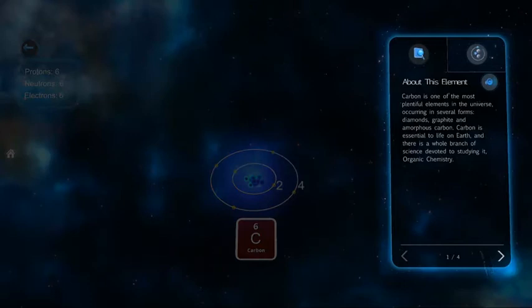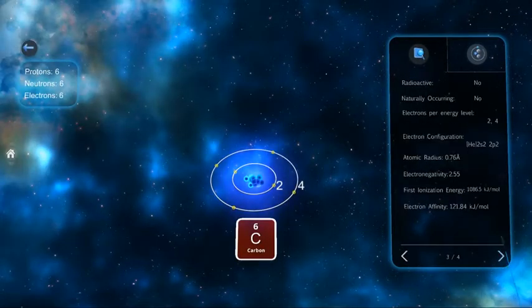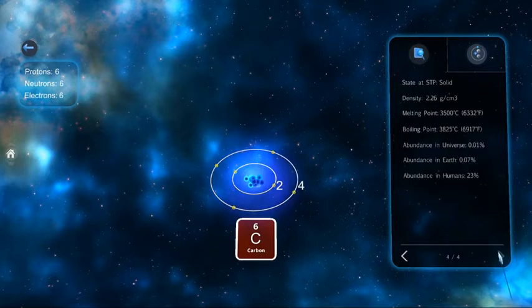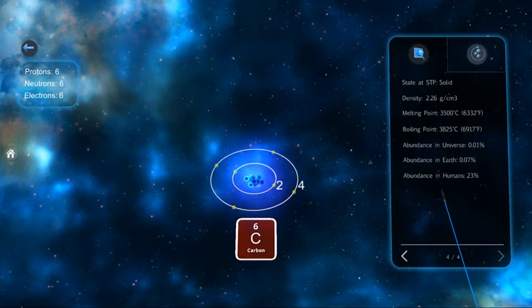And here, all sorts of information about this element is available. Things like its atomic mass, when it was discovered, and my personal favorite, abundance in humans, which means how much of this element is in you.